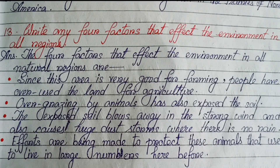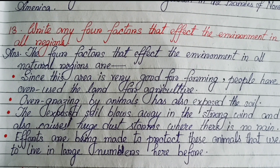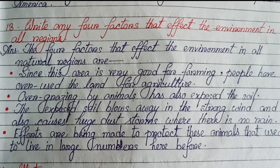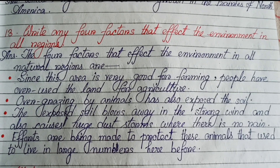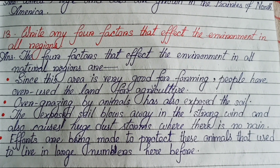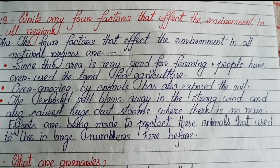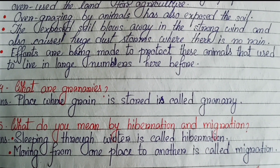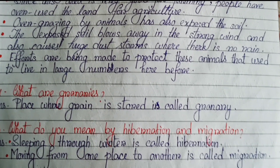Write any four factors that affect the environment in all natural regions. First, this area is very good for farming, so people have overused the land for agriculture. Second, overgrazing by animals has exposed the soil. Third, the exposed soil blows away in strong winds and causes huge dust storms. Fourth, where there is no rain, efforts are being made to protect animals that once lived in large numbers. Also: a granary is a place where grain is stored. Hibernation means sleeping through winter; migration means moving from one place to another.